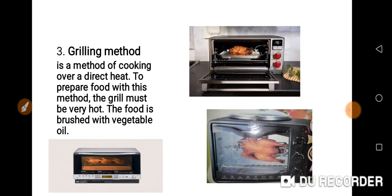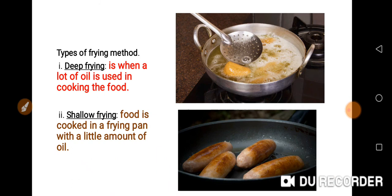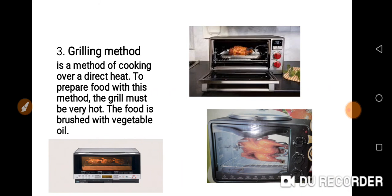The next method is grilling method. Grilling method is a method of cooking over direct heat. When you talk about grilling, the food you want to grill — you have to make sure you season the food, that is, you rub the seasoning over all the body of the food.